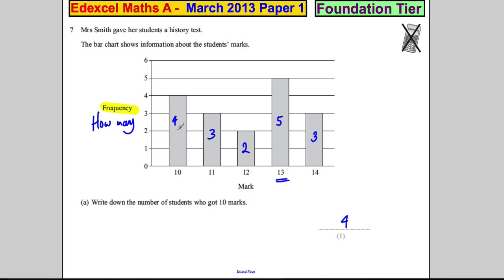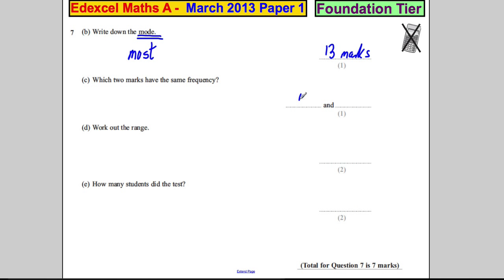Which two marks have the same frequency? We're looking at the graph clearly. 11 marks and 14 marks. So 11 and 14.